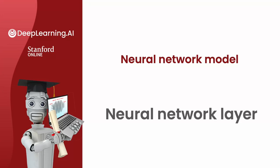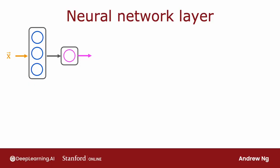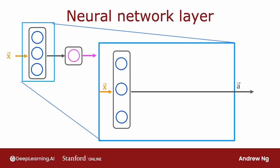The fundamental building block of most modern neural networks is a layer of neurons. In this video you'll learn how to construct a layer of neurons, and once you have that down you'll be able to take those building blocks and put them together to form a large neural network. Let's take a look at how a layer of neurons works, using the demand prediction example where we had four input features fed to a hidden layer of three neurons.